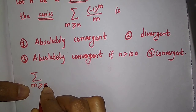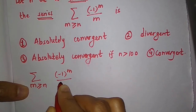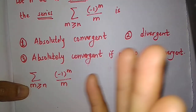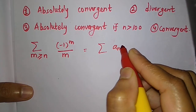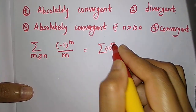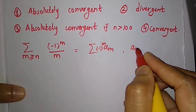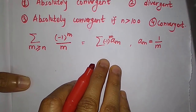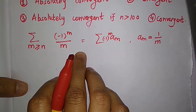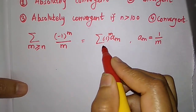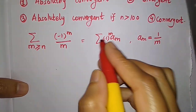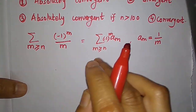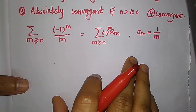The series is: sum for m ≥ n of (-1)^m divided by m, where n is a fixed natural number — you can take it as 1 or 2 or something. So this is (-1)^m times a_m where a_m equals 1/m. This is an alternating series, and (-1)^m denotes the alternating part. Since n is fixed, it will not affect the convergence of this series.